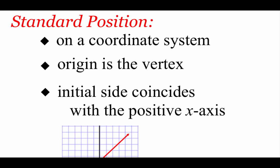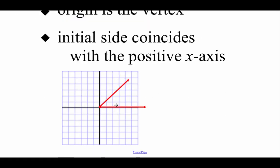We're mainly going to be dealing with angles in what's called standard position. These angles are going to be located on a coordinate grid. The vertex of our angle is going to be located at the origin, and the initial side of our angle is going to match up with the positive x-axis. So the initial side is right here on the positive x-axis, vertex is right at the origin, and then we're taking this ray and rotating it in either direction in order to build these angles.